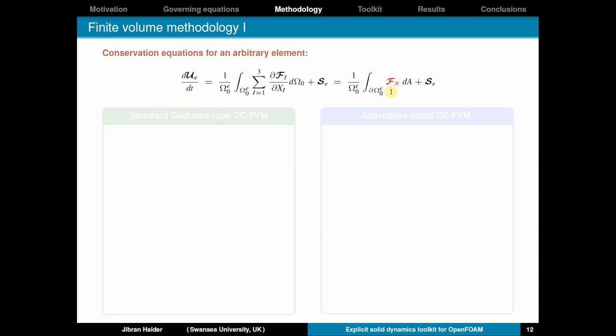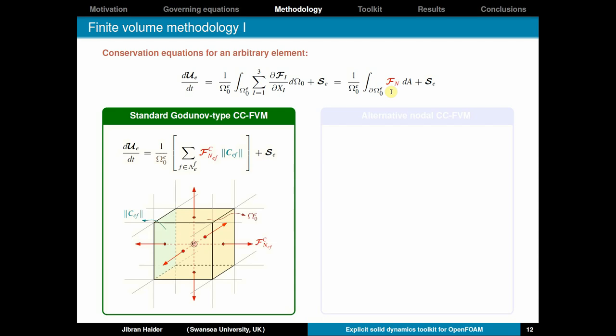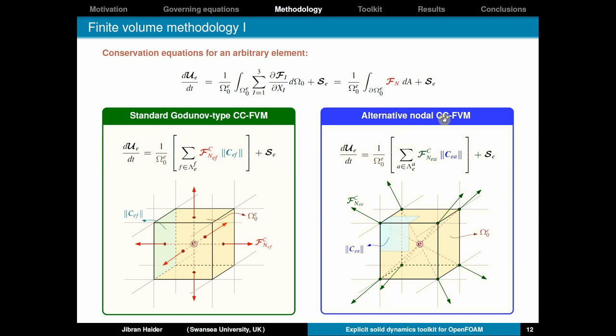Now we have a couple of options how to calculate this. The first one is the standard Godunov type cell-centered finite-volume method. Where your fluxes are located at the centroid of the faces. And you have the area normal vectors shown here. Another alternative option is to have a nodal cell-centered finite-volume method. Where your fluxes now are located at the nodes instead of the faces. And correspondingly you have nodal area vectors.